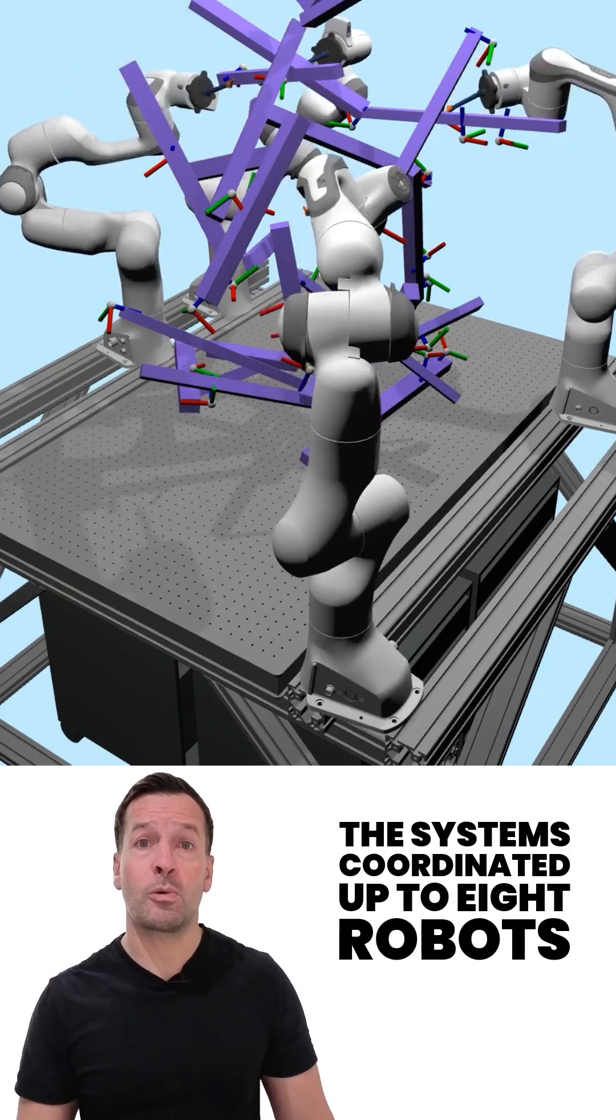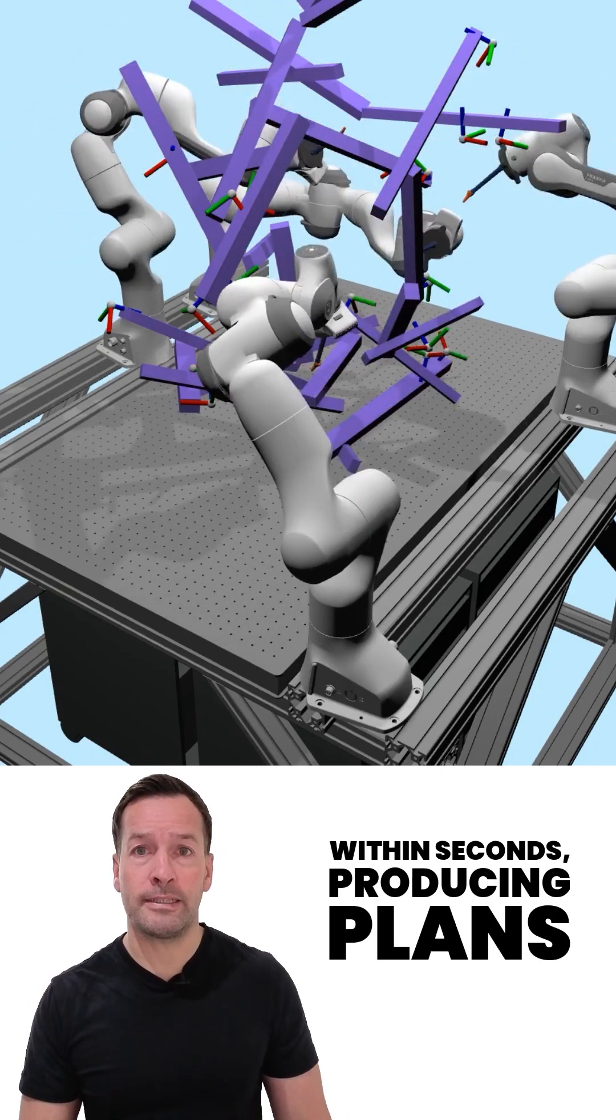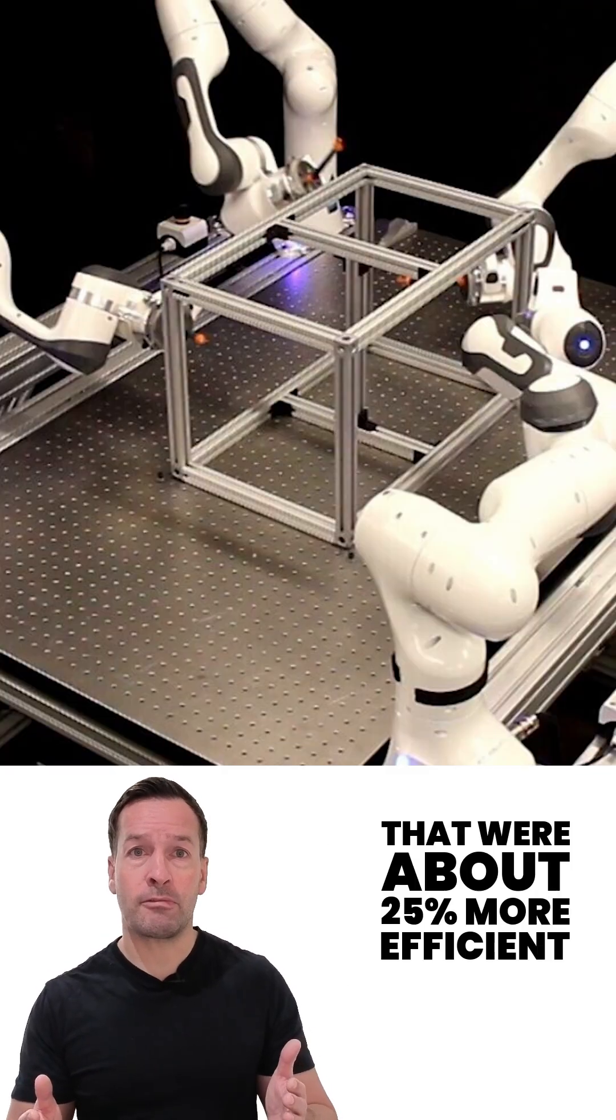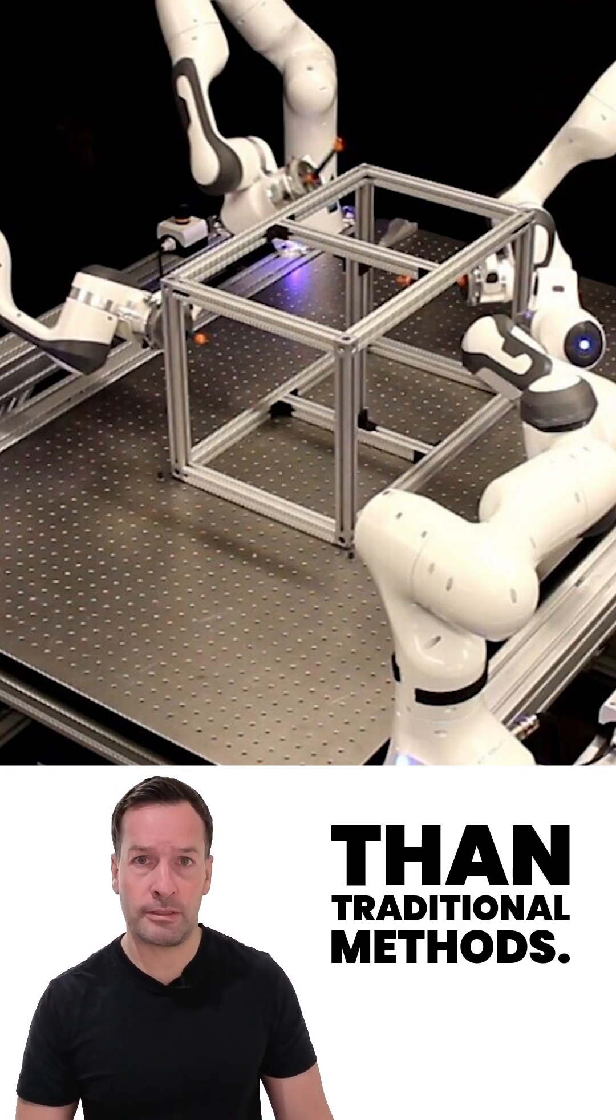In tests, the system coordinated up to 8 robots within seconds, producing plans that were about 25% more efficient than traditional methods.